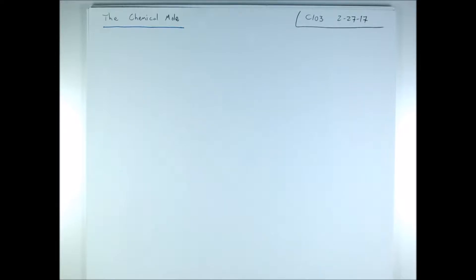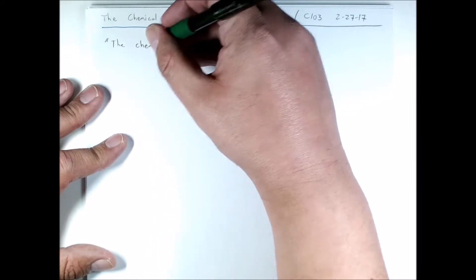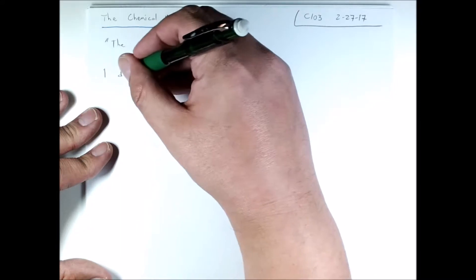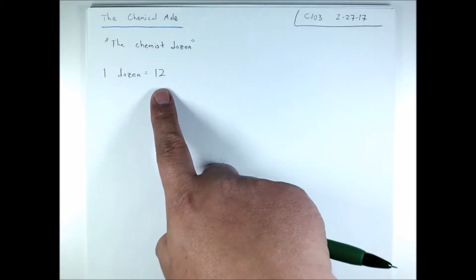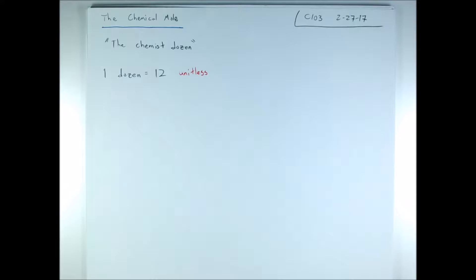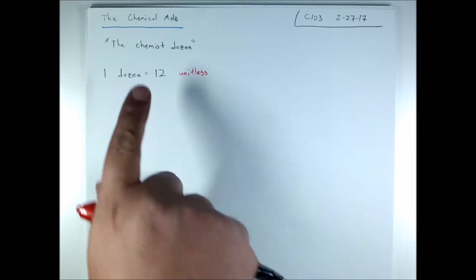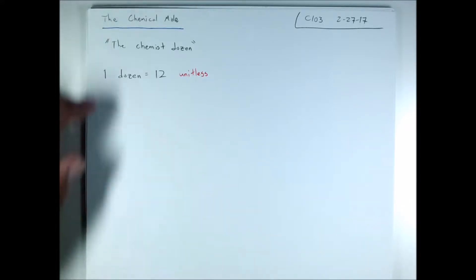The chemical mole — whenever you see this word in chemistry, think about it similarly to how you use the word 'dozen' or 'pair.' Some people commonly refer to the mole as 'the chemist's dozen.' One dozen equals 12, and notice that number 12 is unitless. When you use the word 'dozen,' you associate it with whatever unit you need — a dozen eggs is 12 eggs, a dozen pens is 12 pens. The dozen by itself does not have a unit. The chemical mole works similarly.